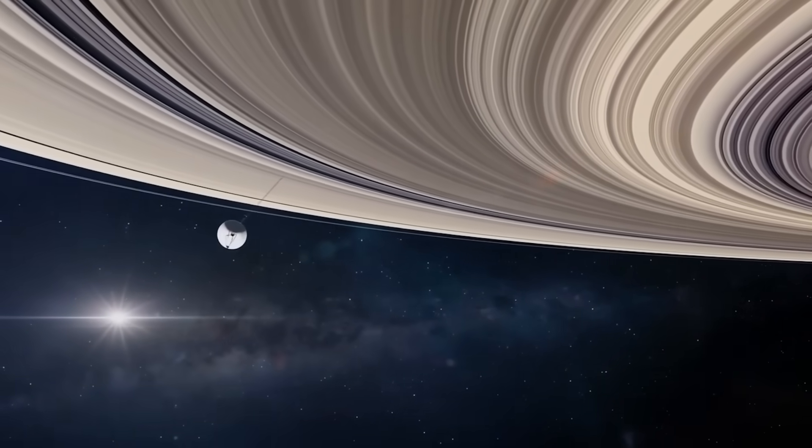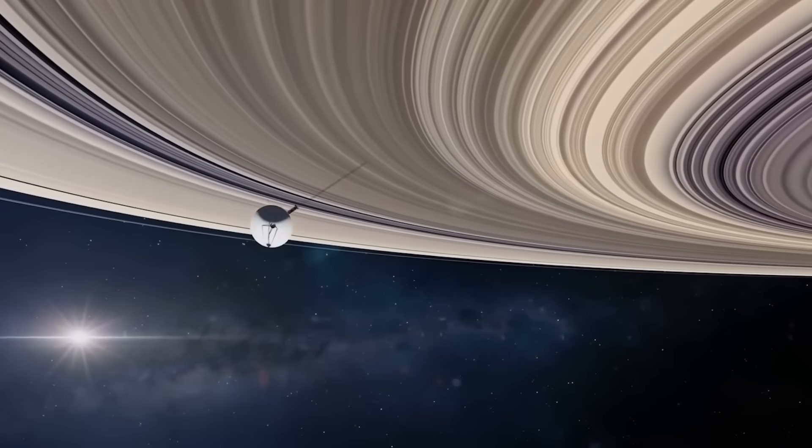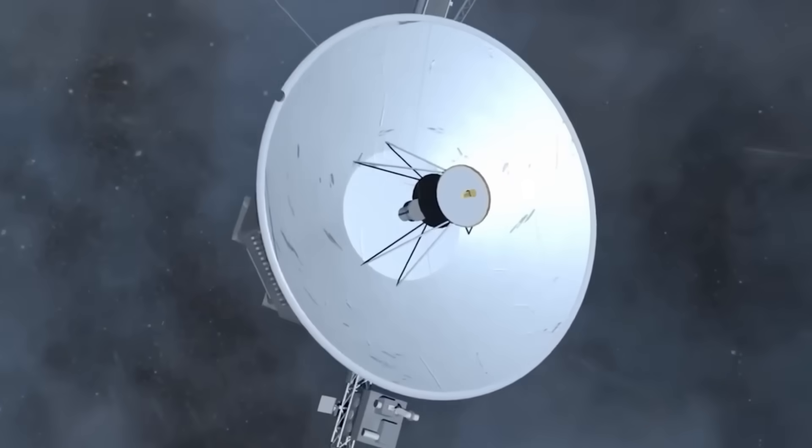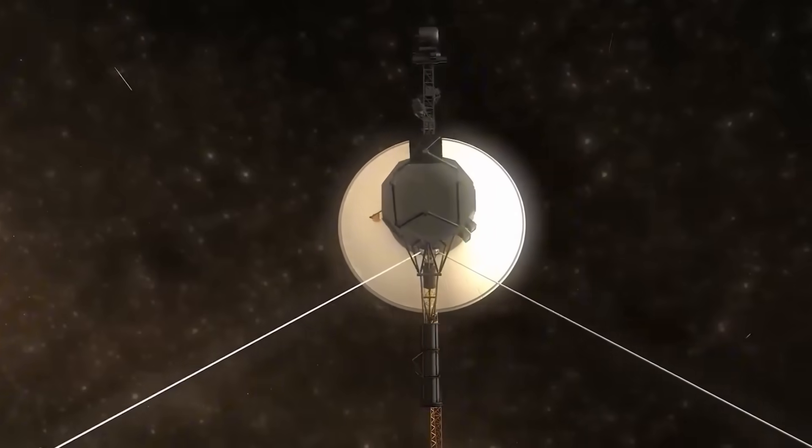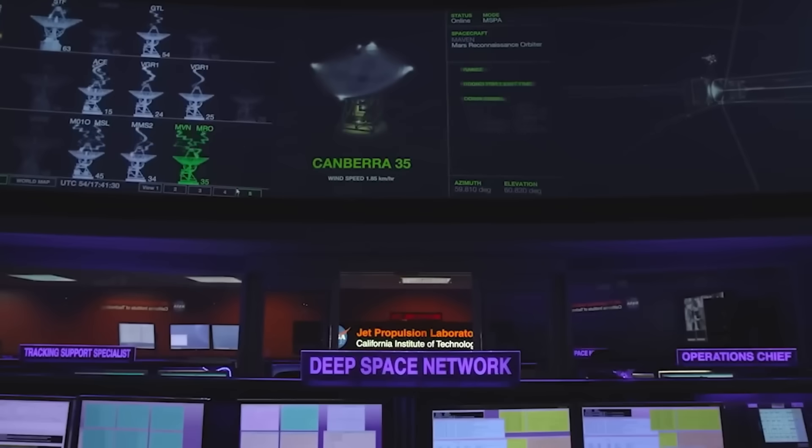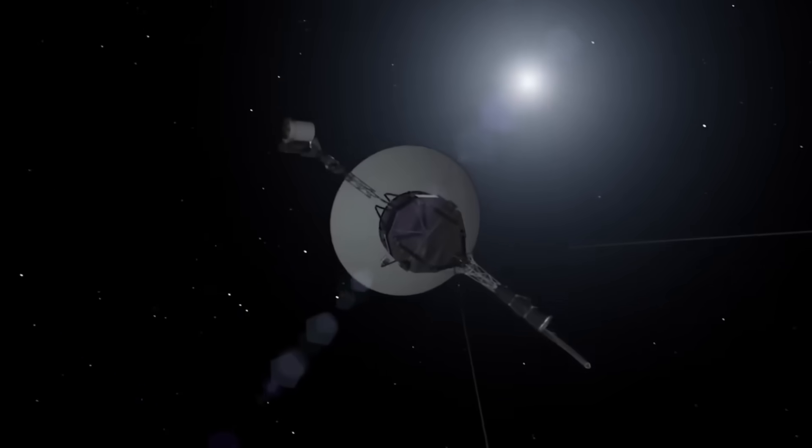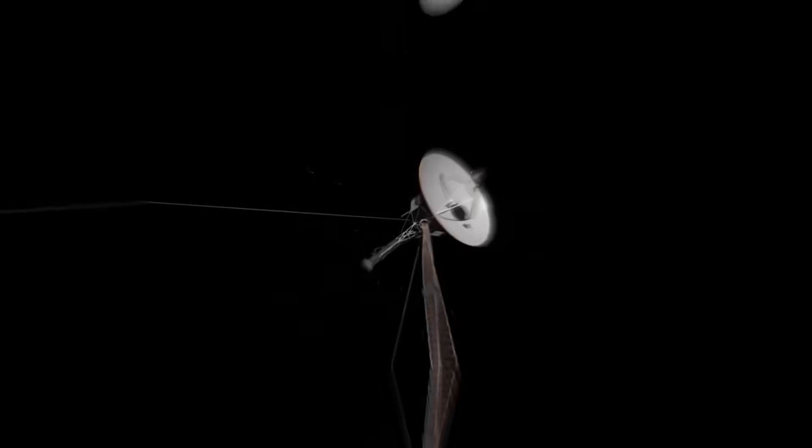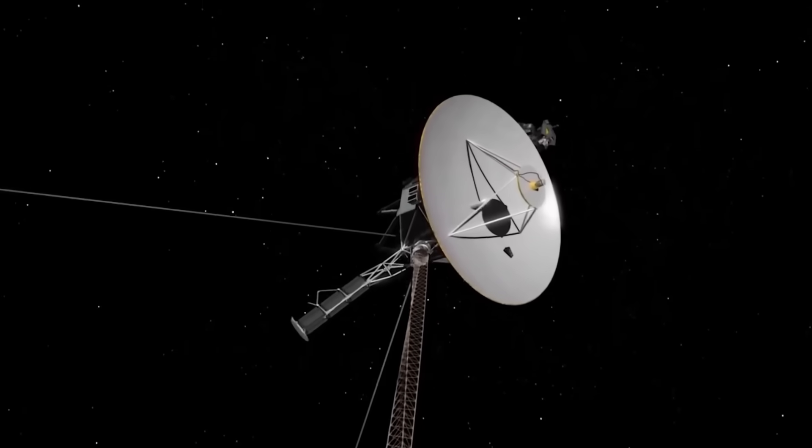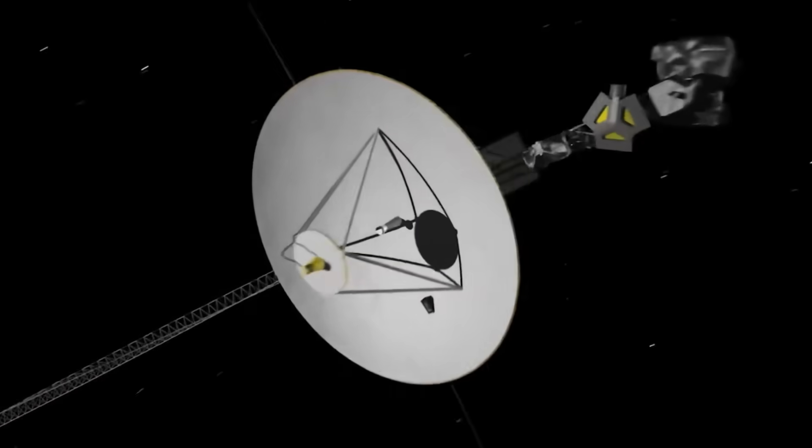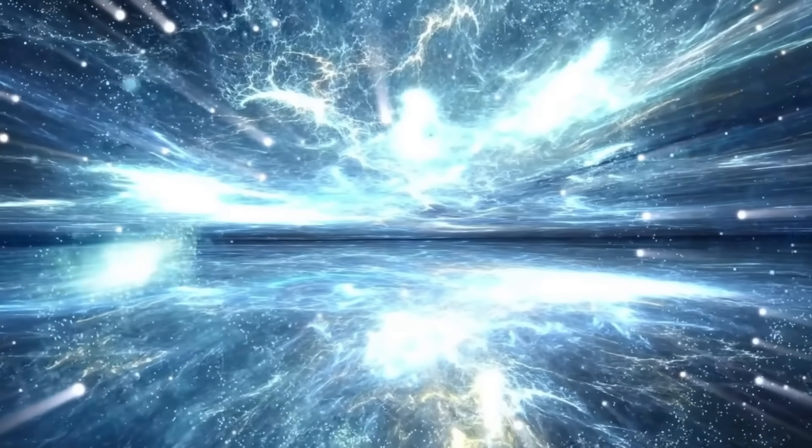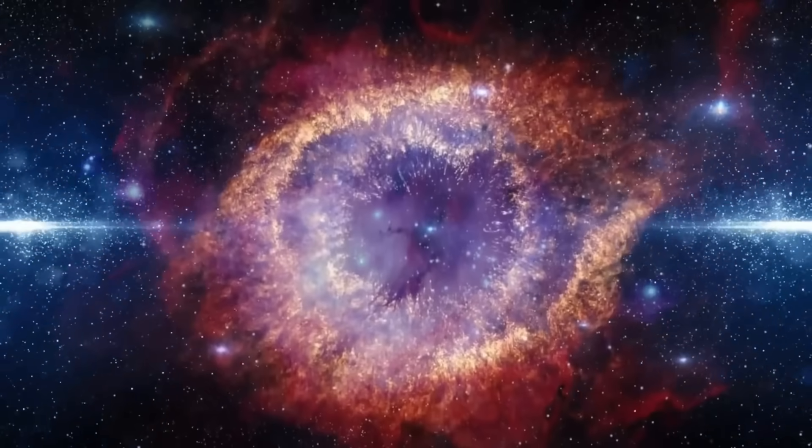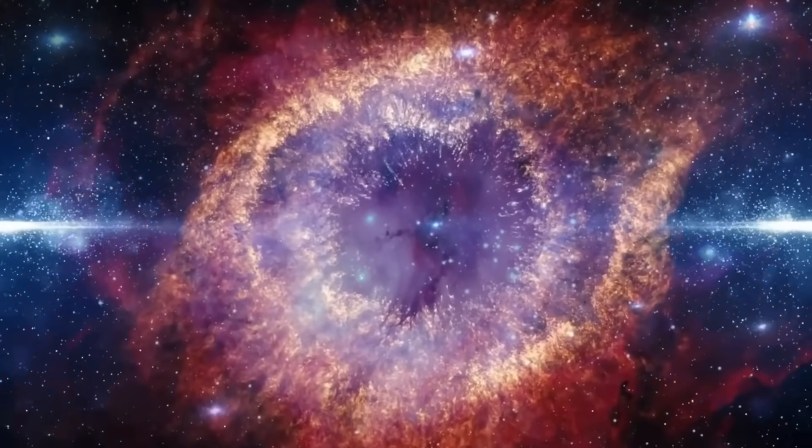While Neptune displayed the great dark spot, a storm similar to Jupiter's but less permanent, Voyager found an odd sideways rotation at Uranus that was unlike any other planet. These discoveries cast doubt on long-held beliefs and raised fresh queries regarding the origins and development of planets. The science of the solar system was drastically altered by Voyager's discoveries. It demonstrated that planets are dynamic entities rather than immobile balls of rock or ice. These experiences proved that exploration always brings surprises, expanding our knowledge and laying the groundwork for subsequent missions.